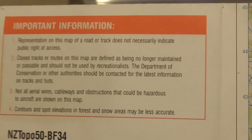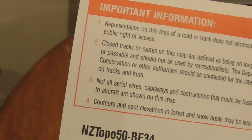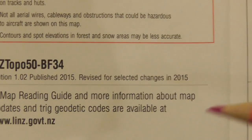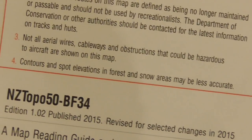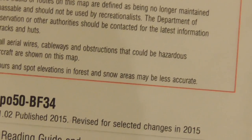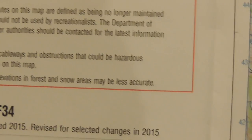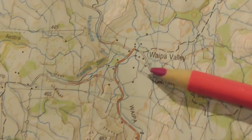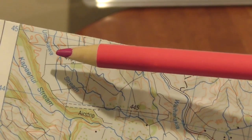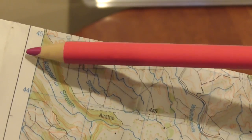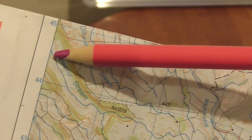Other things the important information can talk about: depending on when the map was made, the land may have changed. This map was published in 2015, so it's only a couple of years old and will be very accurate. But if the map was made 30 years ago, the land may have changed — for example, someone might put a dam further up a stream, and the stream no longer exists. It'll still show the stream on the map, but it may have changed.